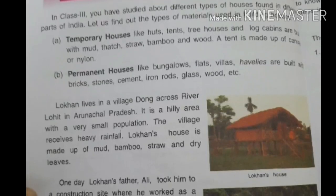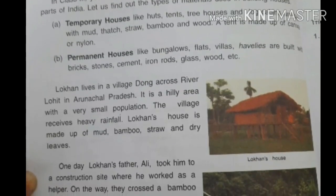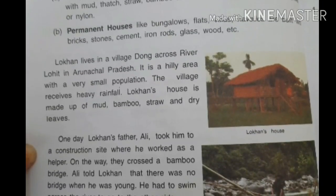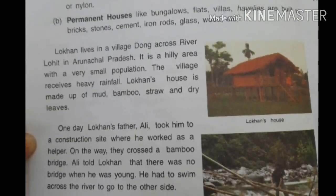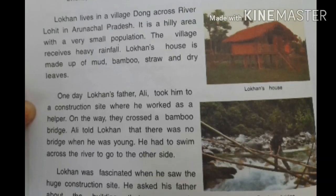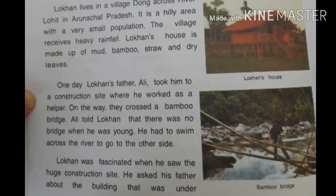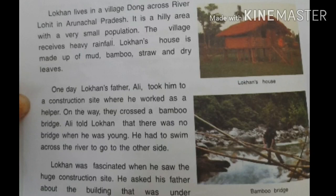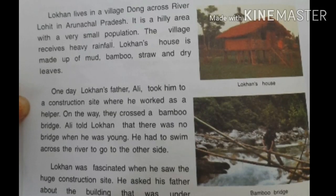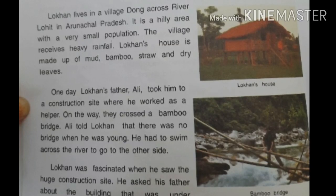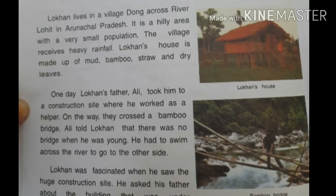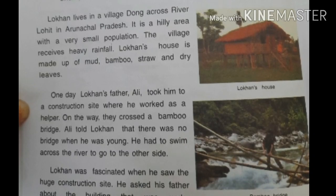In this chapter we learn about how a small village boy, Lokan, lived in Arunachal Pradesh, fascinated with huge construction where his father was working as a worker at a construction site. Lokan lived in a hilly area with a very small population, and his house is made up of mud, bamboo, straw and dry leaves. His house is built up on bamboo sticks and rocks.